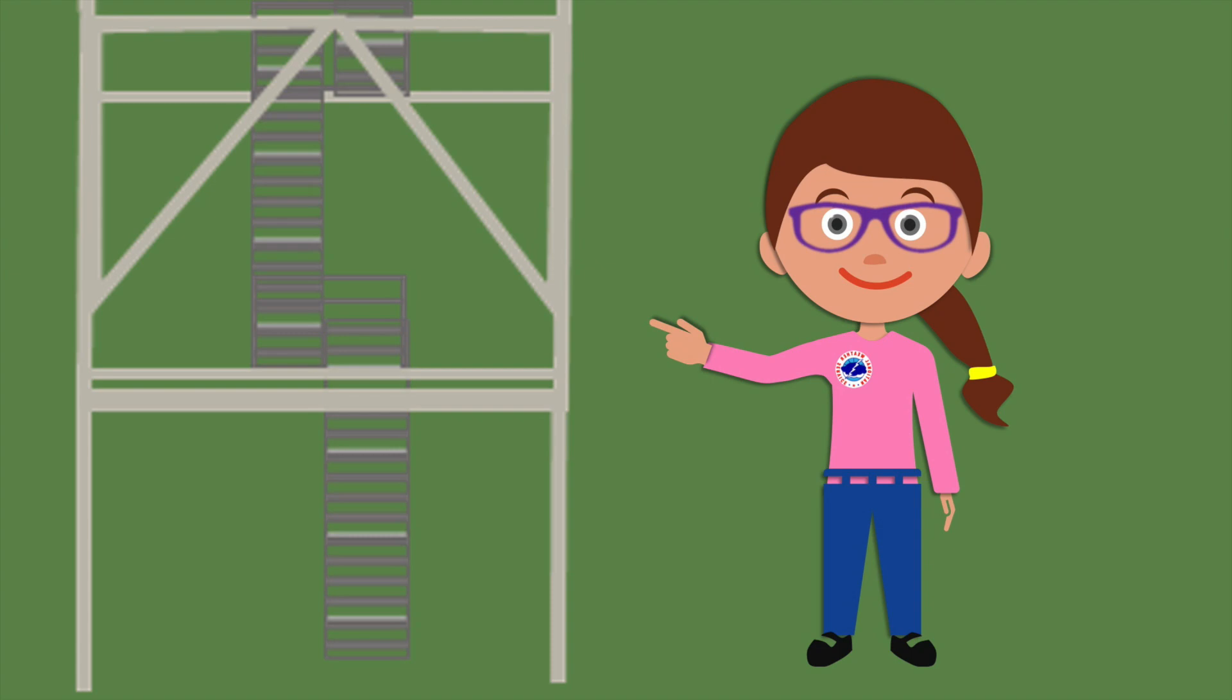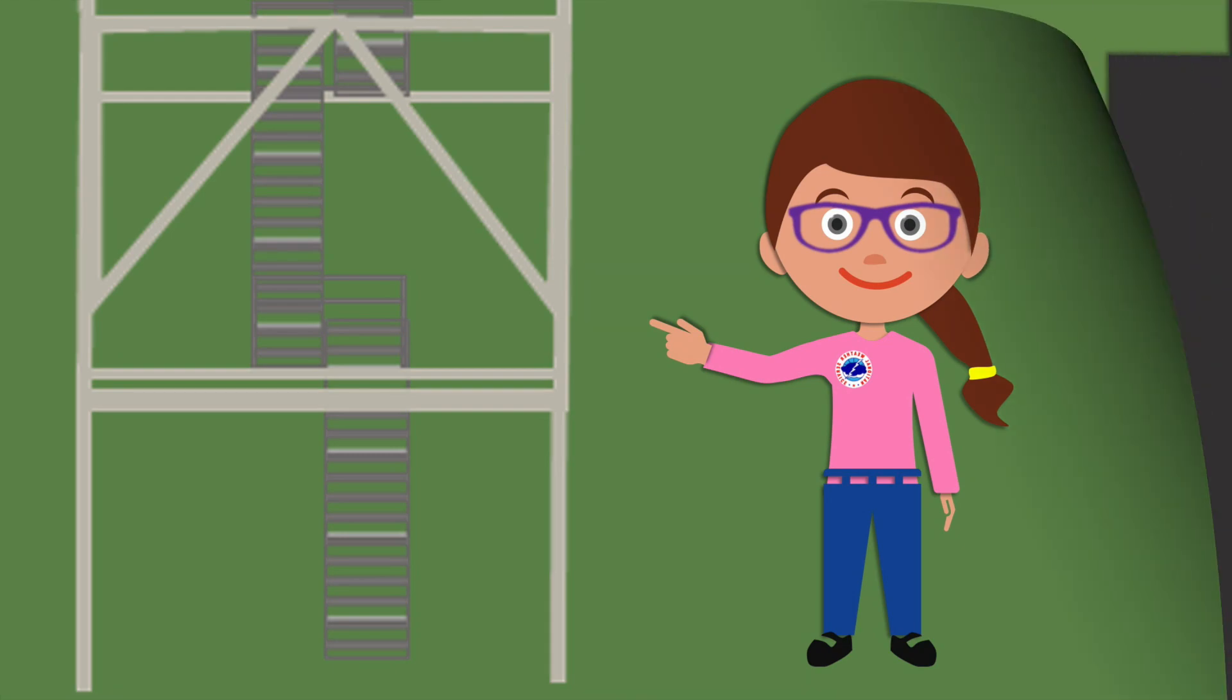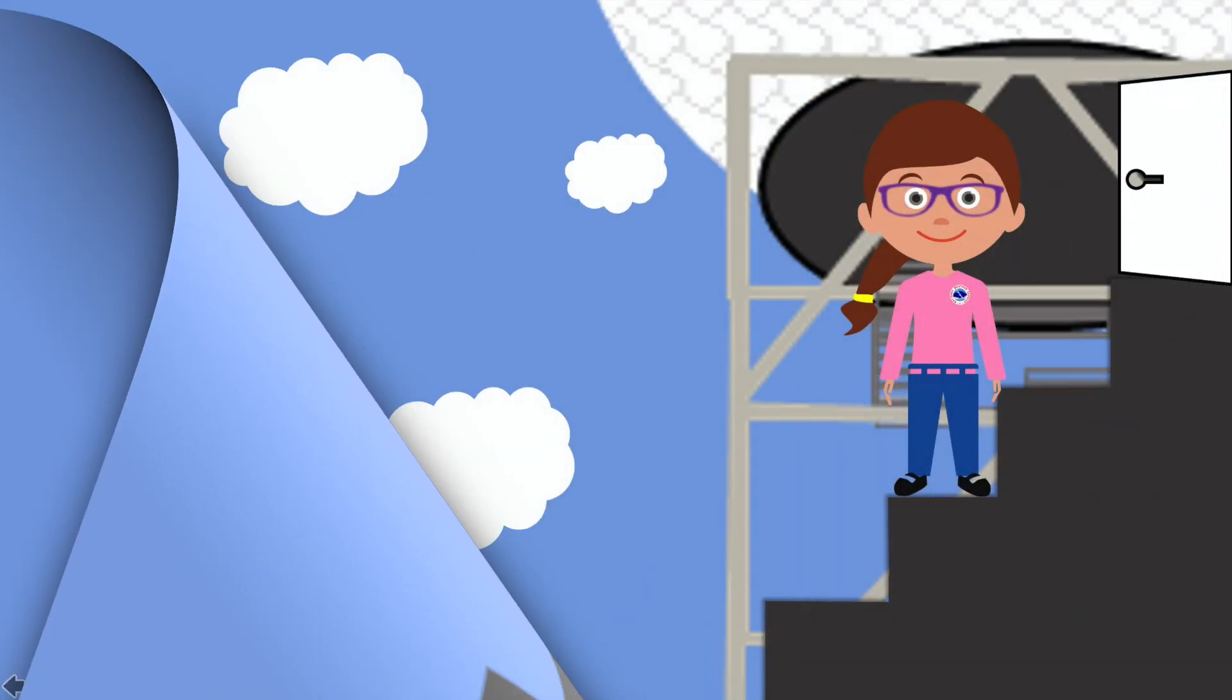Since the radar is so tall there are lots of stairs we have to climb to get to the top. Everybody stand up and let's pretend we are climbing the stairs together. Let's go. You're doing great. Almost there. I can see the top now. We did it. Okay, now that we are at the top let's sit back down and check out what's inside.